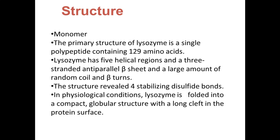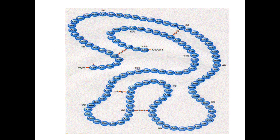The tertiary structure is mainly stabilized by disulfide linkages and is folded into a compact globular structure with a long cleft in the protein surface. This cleft partially divides the molecule into two units. The primary structure is a linear sequence of amino acids from amino acid 1 to amino acid 129, with an amino terminal and a carboxy terminal. There are four disulfide linkages present in this polypeptide chain.